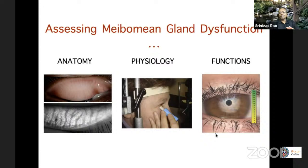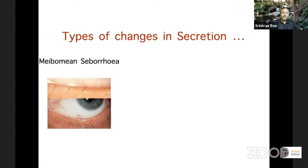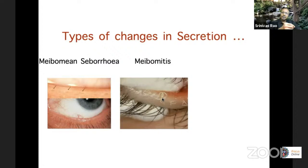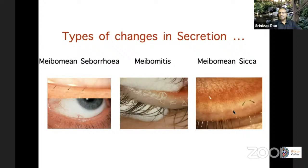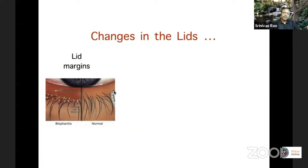This is a spring-loaded pressure device made by Korb and Blackie. You press it against the middle one-third of the lid and it exerts a graded amount of pressure, studying the amount of secretions coming out of the gland openings. You can replicate this by putting your thumb against the middle third of the lower lid with gentle, firm pressure — the thumb will encompass 4 to 5 meibomian gland orifices. You want to see how many glands produce fluid, how much is the fluid, and what is the quality. The changes in secretion: normally when you put pressure you see a small bead of clear fluid. If you see a gush of fluid, that is seborrhea or excessive secretion. If you get a white paste like toothpaste, this is called the toothpaste sign, seen in meibomitis when there's a lot of inflammation. If the glands have become atrophic and no matter how hard you push nothing comes out, this is the sicca variety with very little secretion.